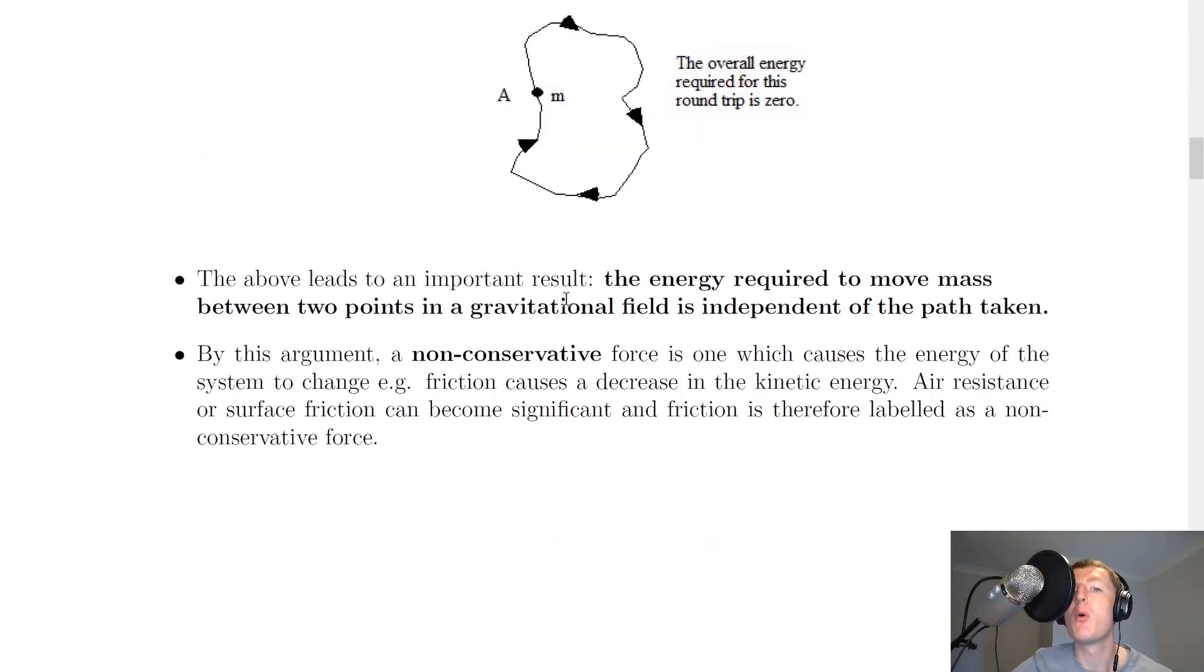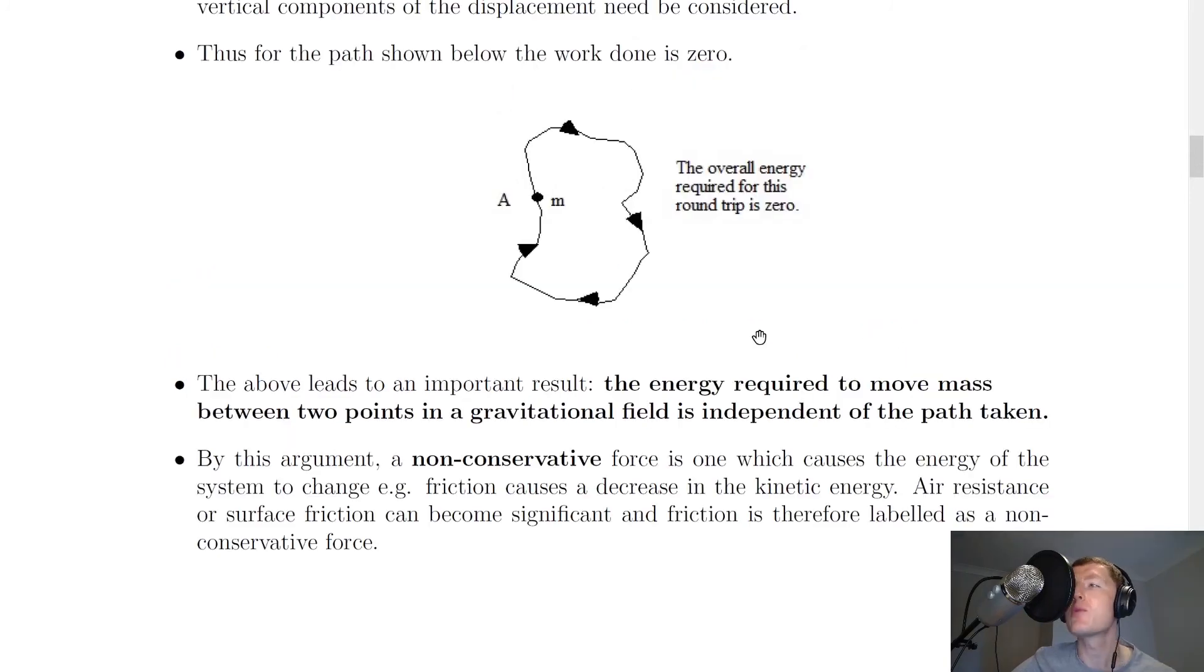The above scenario leads to an important result. The energy required to move mass between two points in a gravitational field is independent of the path taken. So that is what we mean by a conservative force here, that the energy needed to move the mass between any two points does not depend on the path taken, when within a gravitational field.